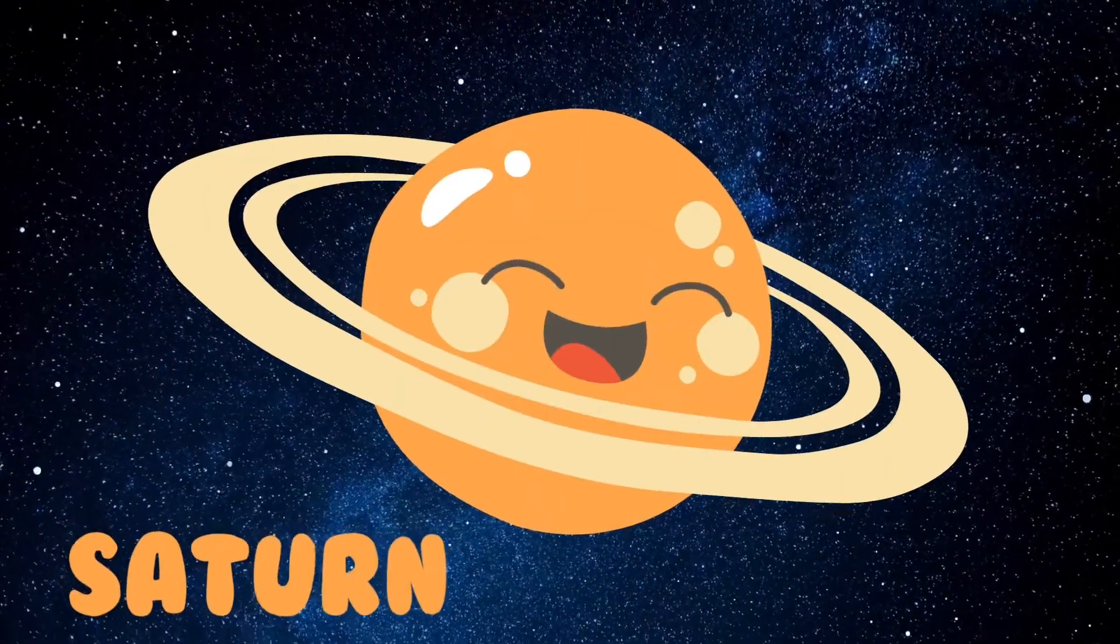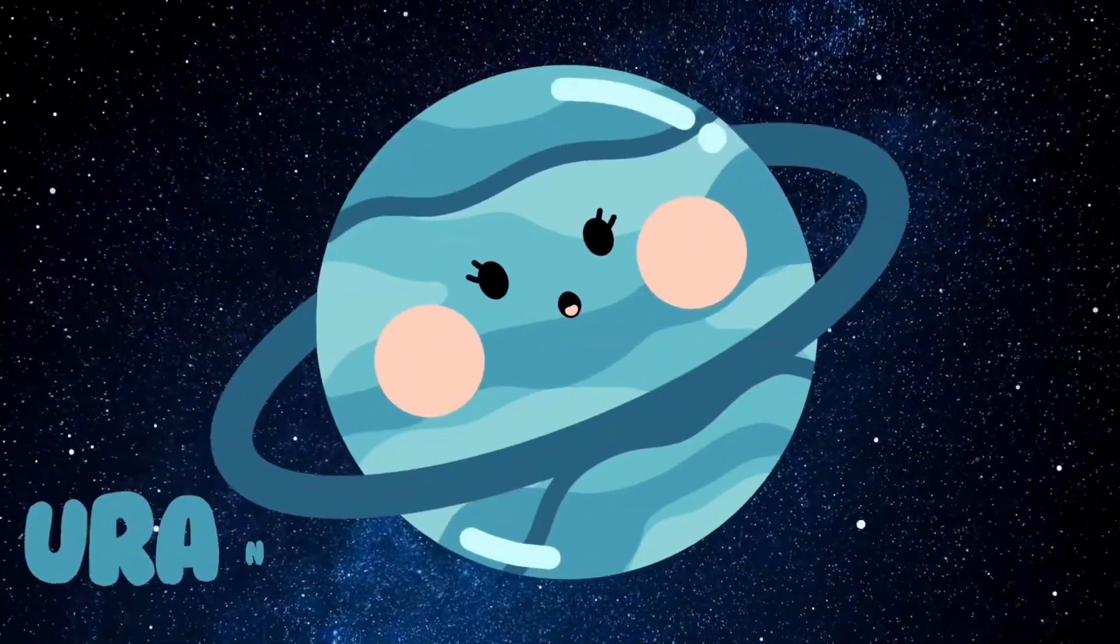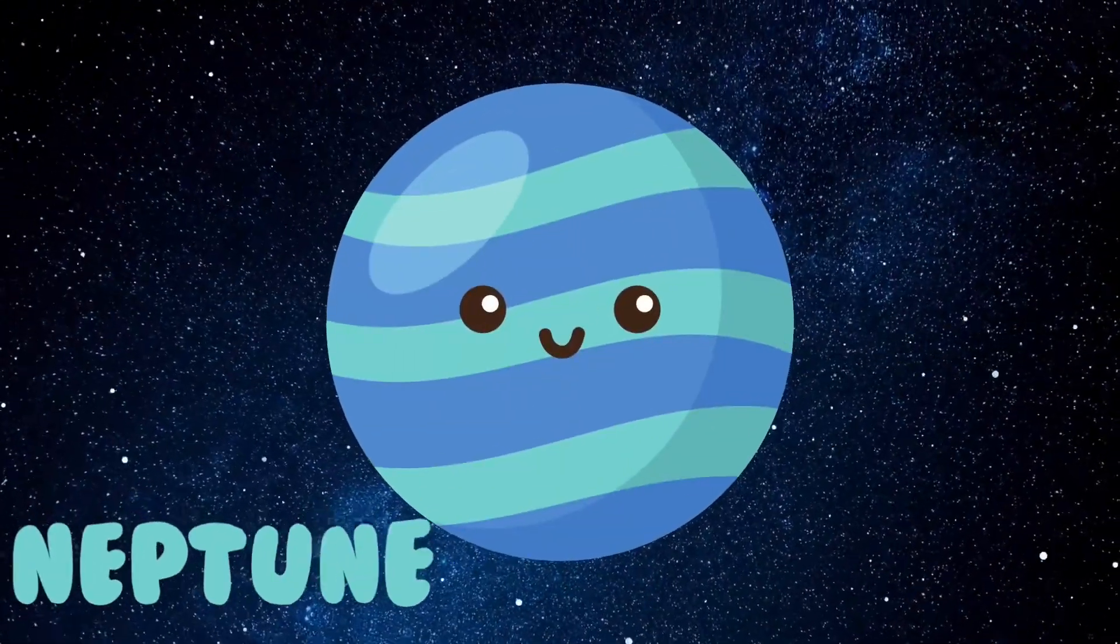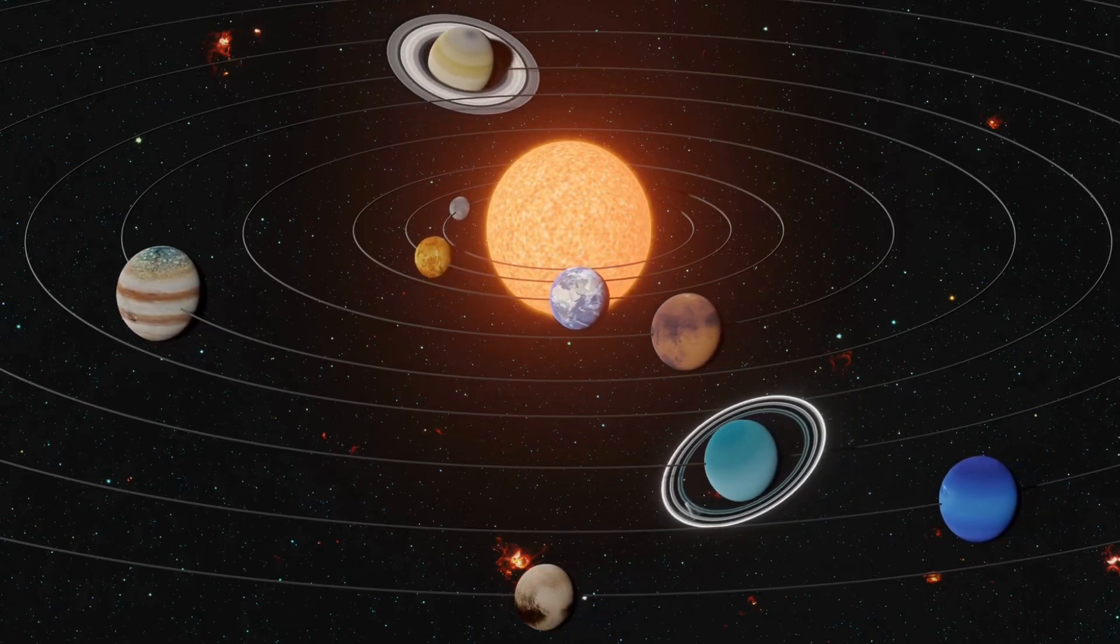Saturn is the second biggest planet and it's surrounded by rings. Uranus is the coldest planet in our solar system. Neptune is the planet farthest away and it's a very, very windy place.